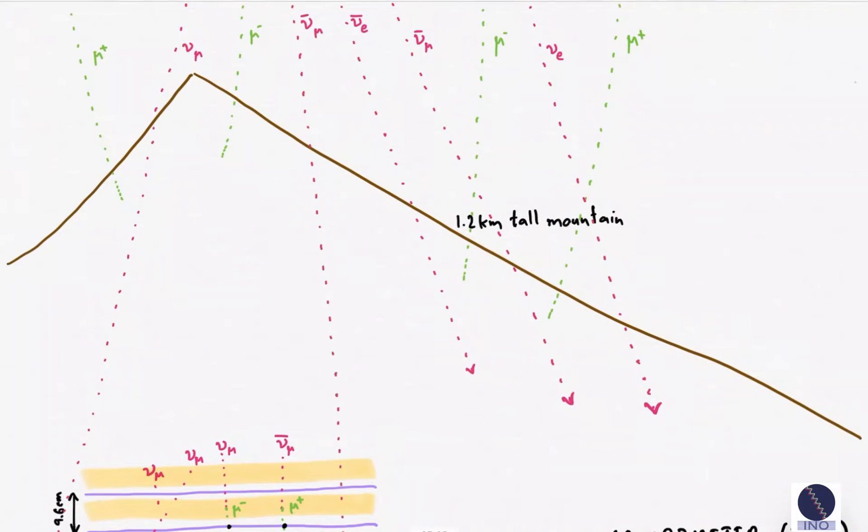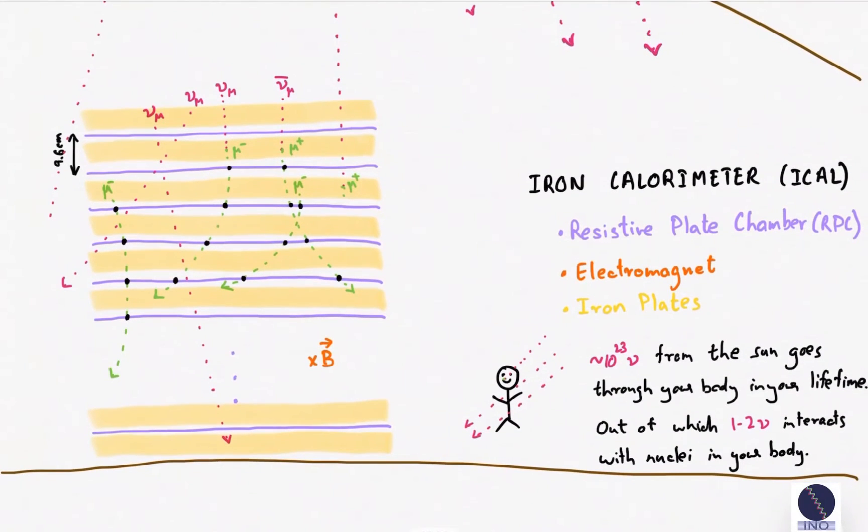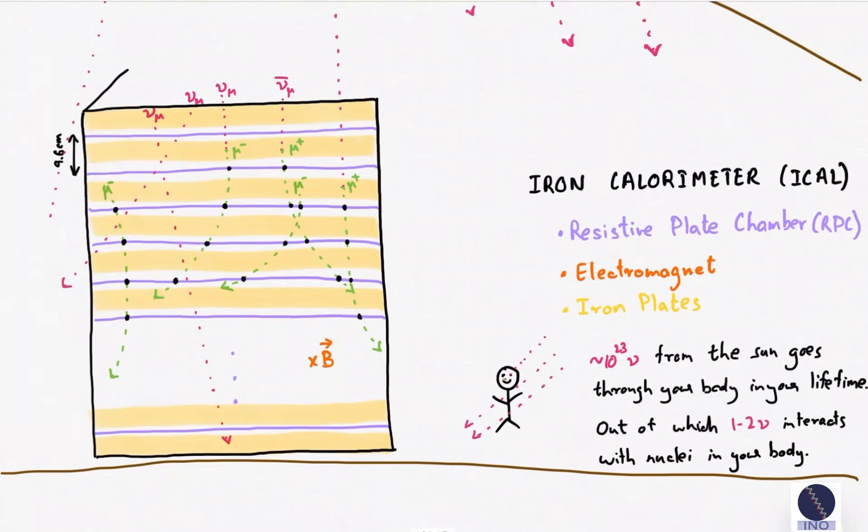The probability of neutrino interaction is extremely small, so the ICAL, like other neutrino detectors around the world, is going to be a big detector.